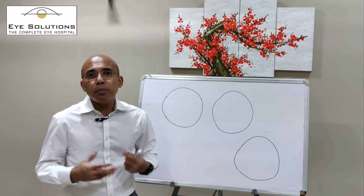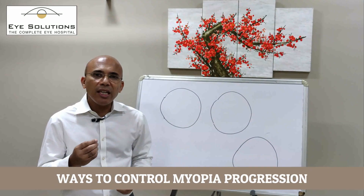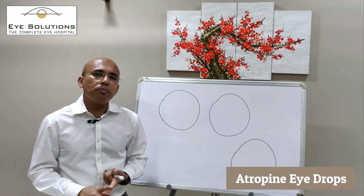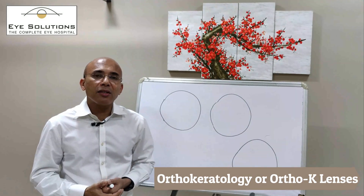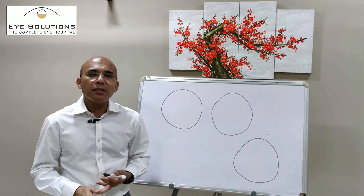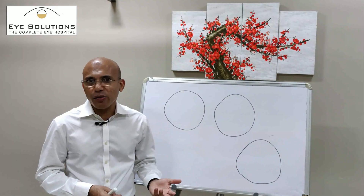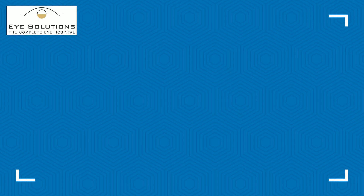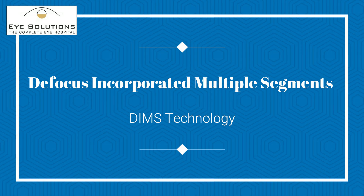Myopia control has thus become a very important topic in the eye care world. Apart from a few others, there are three main ways that you can control myopia today. The first is by using atropine eye drops. The second is by using a particular type of contact lens called ortho-K lens. And the third is by using specialized lenses which will cause a defocus in some areas of your vision. These lenses are based on what is known as the DIMS technology, which stands for Defocus Incorporated Multiple Segments.